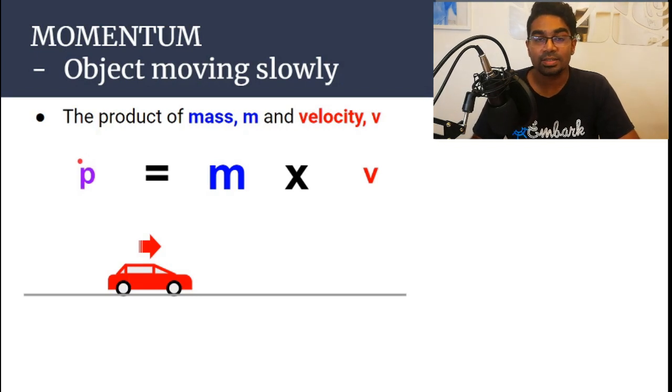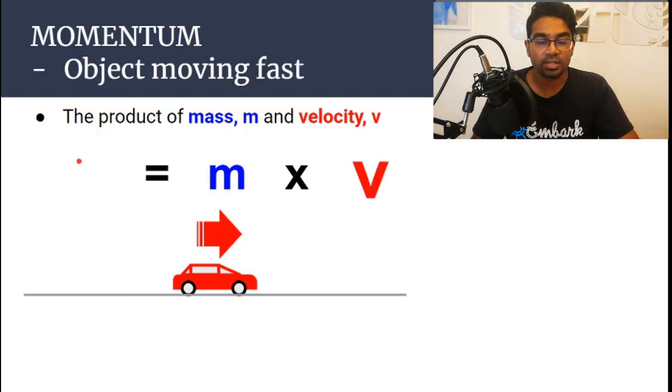But, if the velocity is high, if a car is moving fast, if an object is moving fast, then the velocity is large. Then, given that the mass is fixed, when the mass is multiplied by the large velocity, then the momentum, we expect it to be large as well.